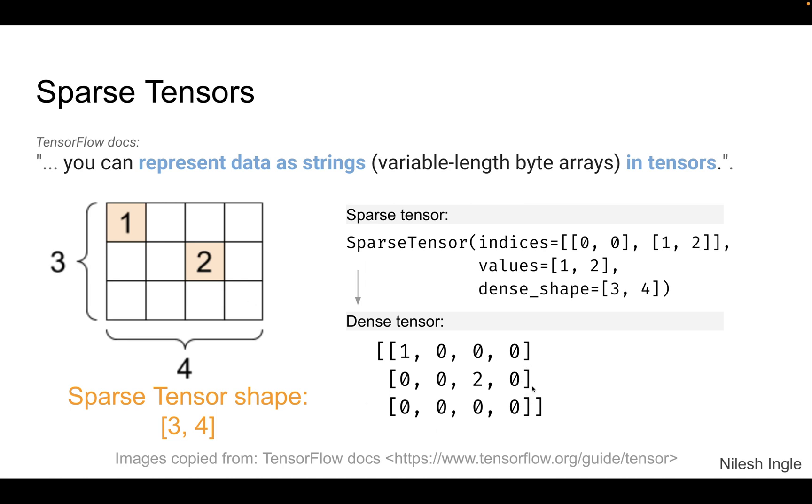And so the dense or the traditional way to represent this tensor would have been the one shown down here which is one zero zero zero zero two zero zero zero zero zero. And a sparse way to represent that would be just to report the indices for one which is zero zero and then for two which is one two. Then specify the values at each of those indices one and two and then finally specify the shape of the total tensor.